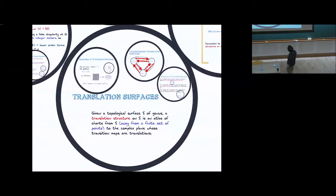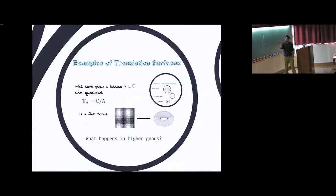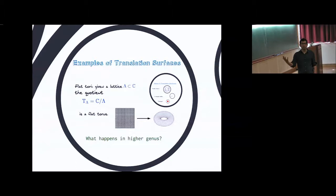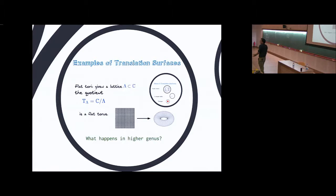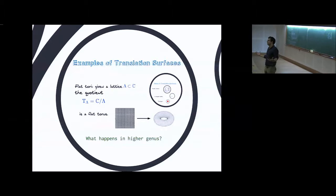Given a topological surface S of genus G, a translation structure on S is an atlas of charts from S away from a finite set of points to C, whose transition maps are translations. The first important example is to take a quotient of C by a group of translations — of course you'll get such a structure. If you don't insist on compactness, a cylinder is a nice translation surface: C mod Z. But if you want a compact surface, you take C mod two directions of translation and you'll get a flat torus.